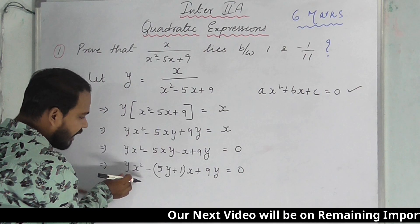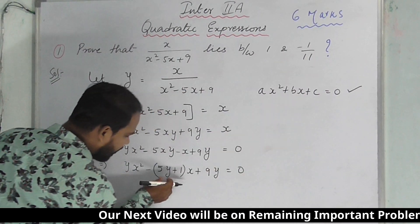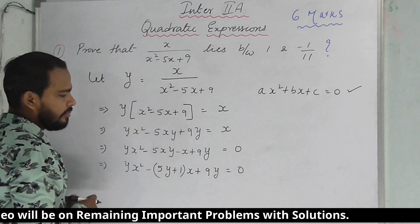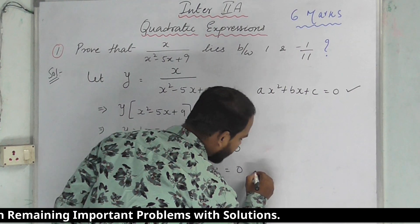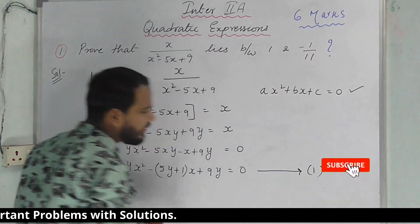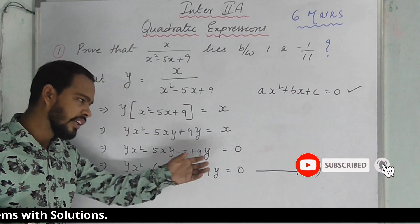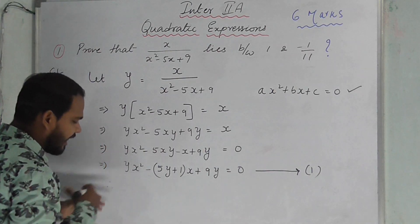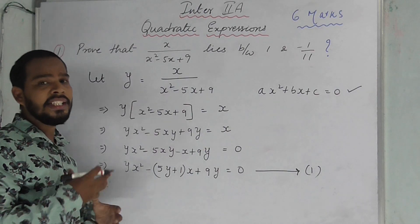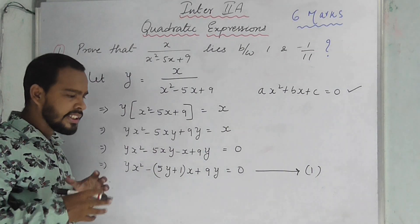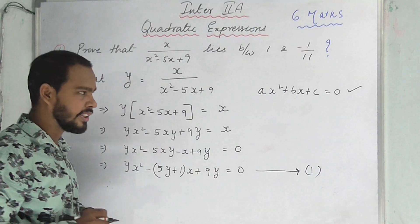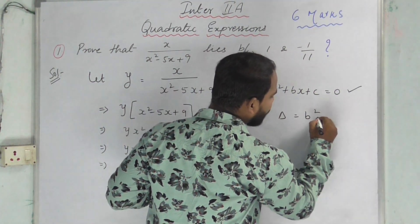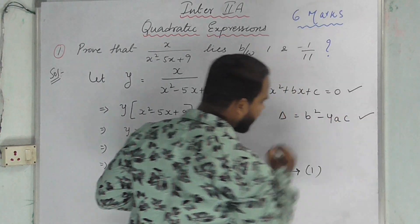Here, a equals y, b equals minus (5y plus 1), and c equals 9y. The final step uses the discriminant formula: delta equals b squared minus 4ac. This discriminant formula is the key to the next answer.